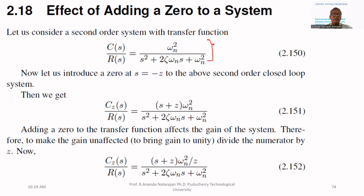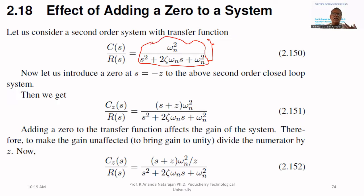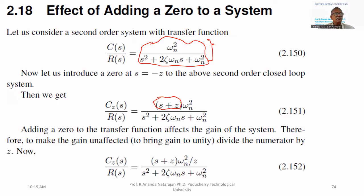First, let us see the effect of adding a zero to the system. The original system is this — it doesn't have any zero. But I want to alter its characteristics, so I am adding some additional zero to that system. So, this S plus Z is added to the system, meaning we will add some additional components to our system.